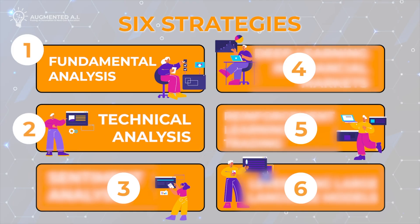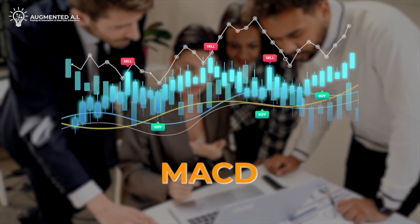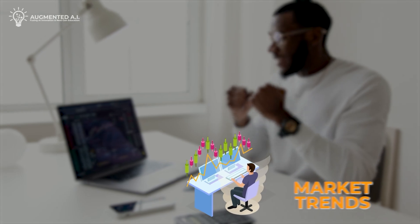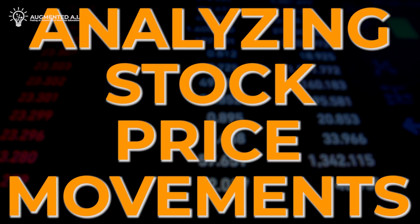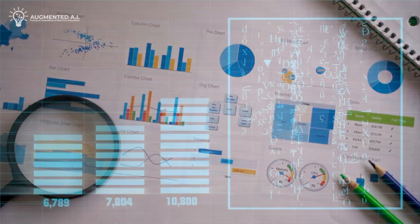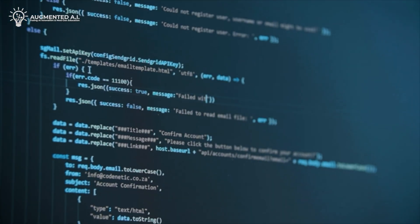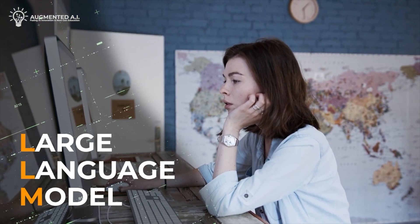Strategy 2 is technical analysis, diving deep into market charts and candlestick patterns. Here we focus on popular techniques like MACD and Bollinger Bands, amongst many others. These tools help us understand market trends and make better trading decisions by analyzing stock price movements — it's about decoding the market's language through its charts. We'll be showing you how to code these algorithms and how to fuse them with LLMs in later modules.